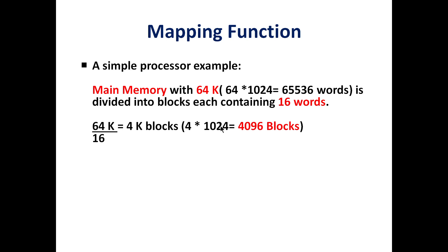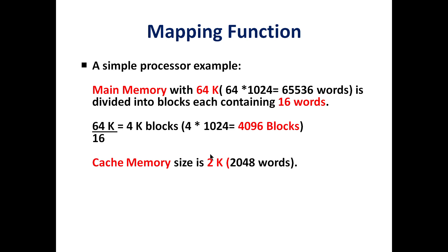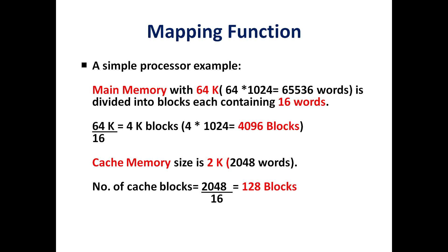That is 4096 blocks, numbered 0 to 4095, in main memory. The cache memory size is 2K, which is 2048 words. With a block size of 16 words, the number of cache blocks is 2048 divided by 16, giving 128 cache blocks, numbered 0 to 127.